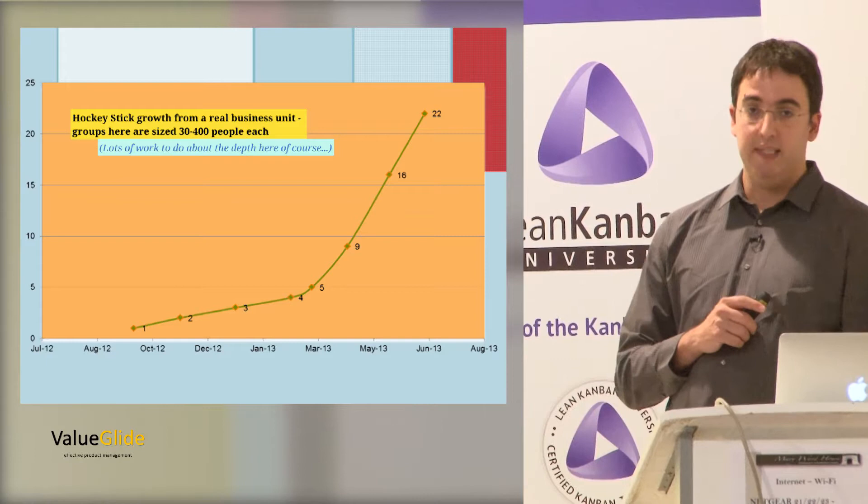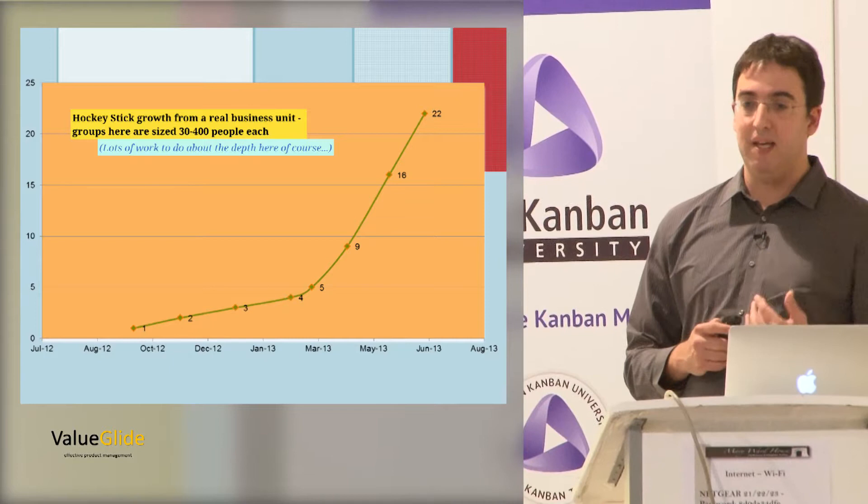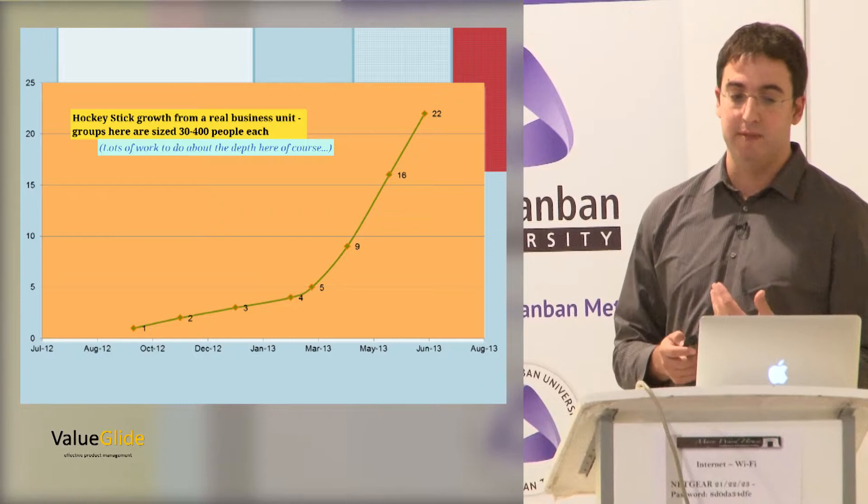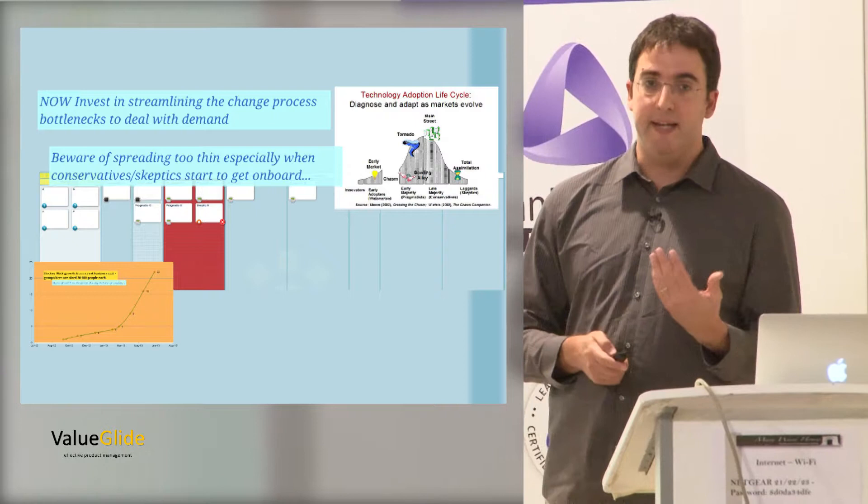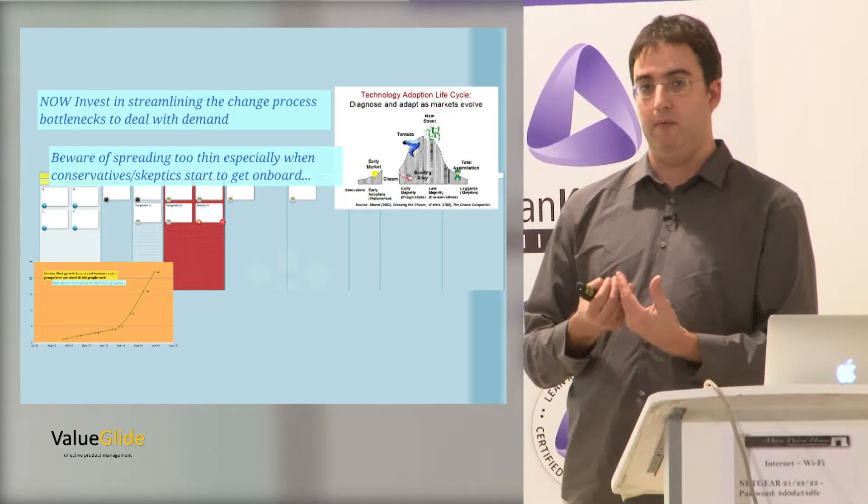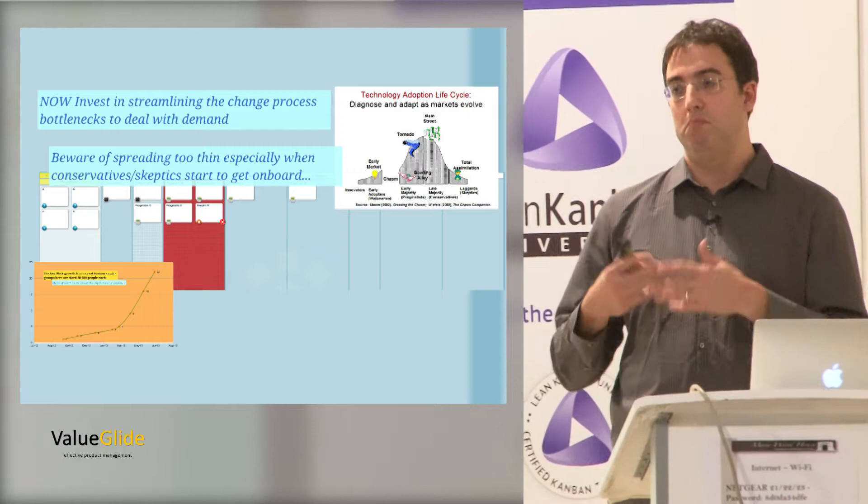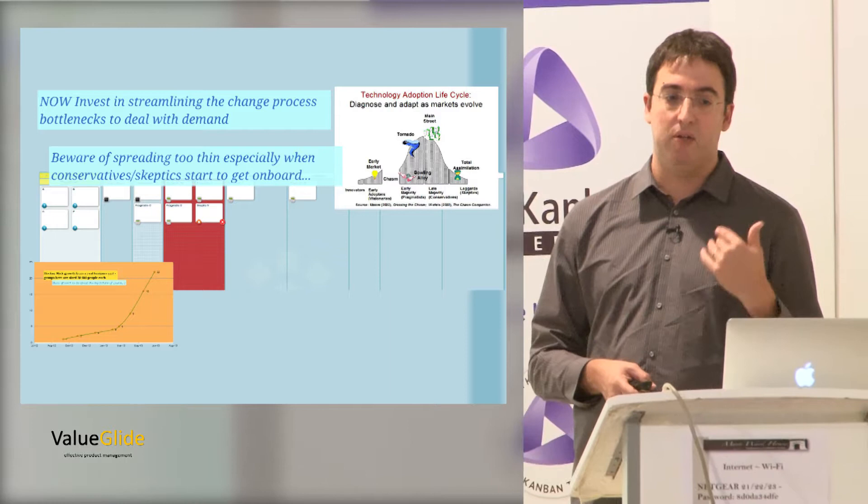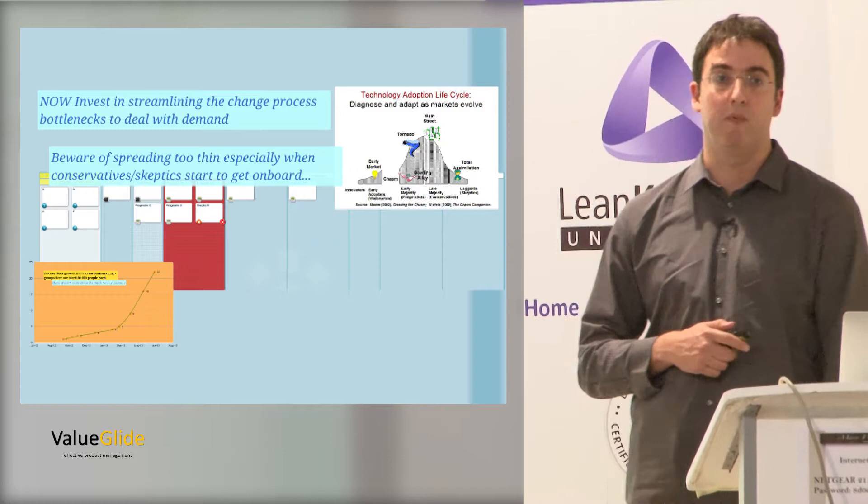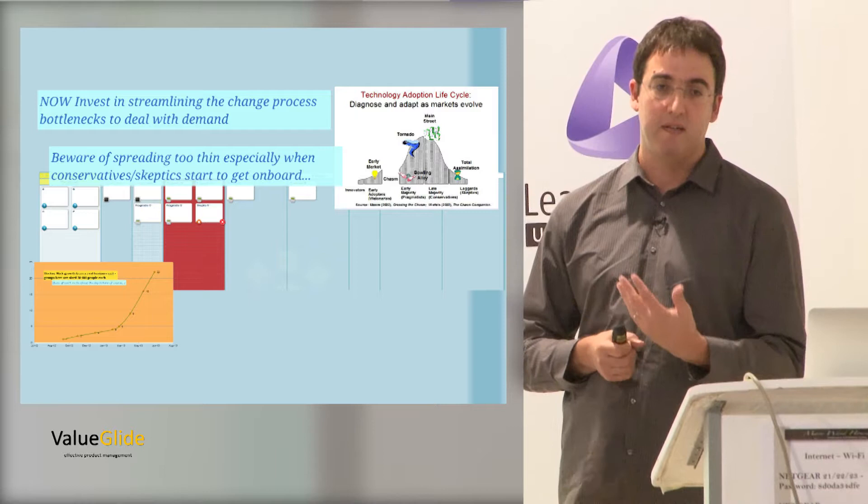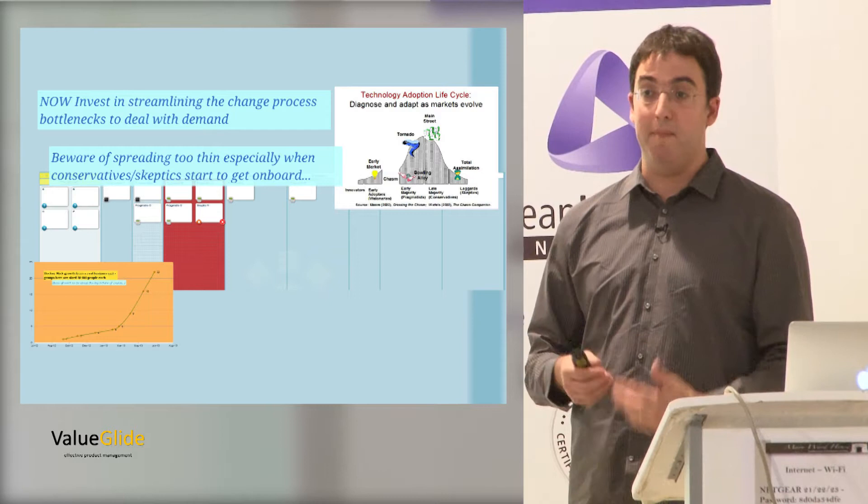So at some point, what will happen is you get through this chasm. When you get through the chasm, what you see is the growth, the hockey stick. This is a real example from one of our clients. This creates a problem. More and more groups want your help. And at this point, you have to find a way to streamline what is going on, to have a method for how to help those groups. Have some more structure rather than invent everything each time. This is the time that you want to get more people, have some more structure, and be very careful of spreading too thin. This might be the good time to put a WIP limit on your change initiative Kanban. Until then, it's not a real problem, because the customers are not pulling. But at this point, there is a problem that the demand is overwhelming your capabilities to help people.